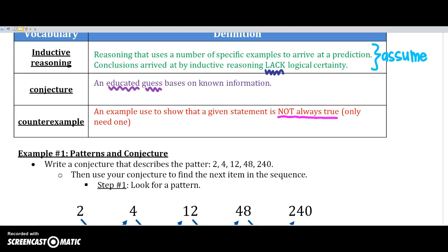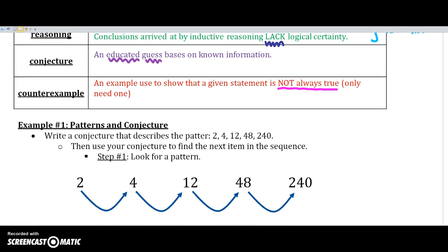Let's get into some of our inductive reasoning. And one big thing inductive reasoning is that you've done before are patterns. So write a conjecture or a statement that describes the pattern: 2, 4, 12, 48, and 240. Then use the conjecture to find the next item in the sequence. So the first step is always to look for that pattern.